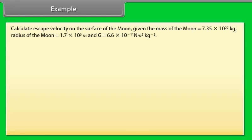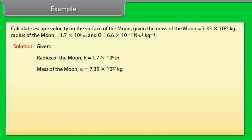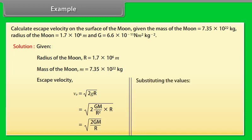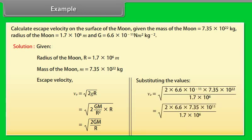Example. Let's take an example of escape velocity. Calculate escape velocity on the surface of the moon given the mass of the moon, radius of the moon and value of g. Let's see the solution. Given radius of the moon r is equal to 1.7 into 10 to the power 6 meter, mass of the moon m is equal to 7.35 into 10 to the power 22 kg. Escape velocity is equal to under root 2 g r. By putting the value of g we get escape velocity is equal to under root 2 g m upon r. By substituting the values we get escape velocity is equal to 2.4 into 10 to the power 3 meter per second.